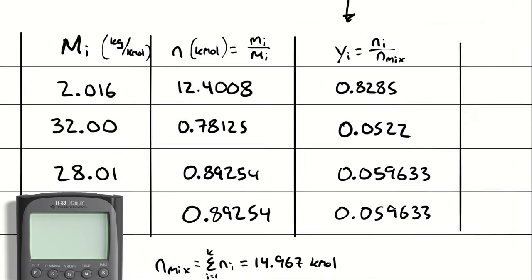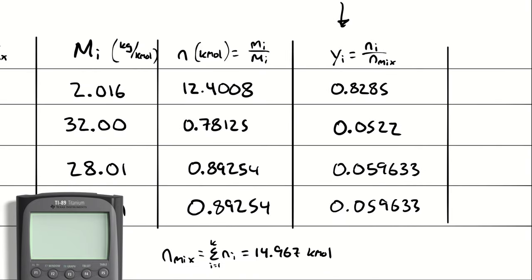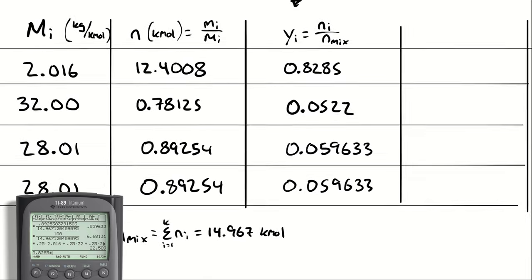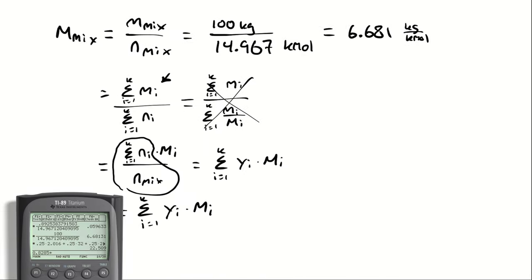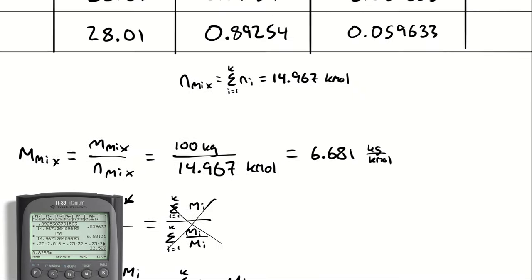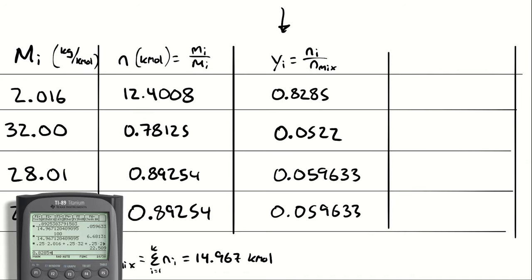To verify, multiplying each molar fraction by its molar mass and summing should give about 6.7 — and indeed we get the same molar mass, confirming both methods agree.